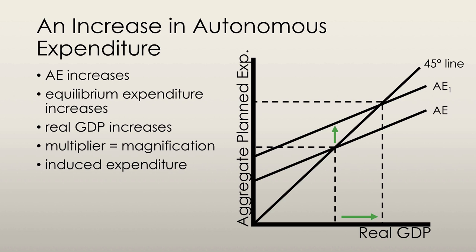We can see that if aggregate expenditure increases, so the curve shifts upwards, there's actually a greater increase in real GDP. The multiplier is the amount by which a change in autonomous expenditure is magnified to determine the change in equilibrium expenditure and real GDP.